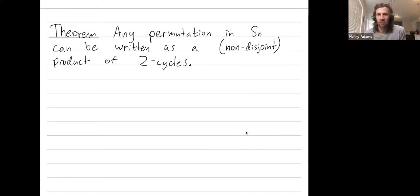Welcome folks. I want to explain why any permutation in the symmetric group Sn, namely all permutations on a set of numbers from 1 up to n, can be written as a product of two cycles. Let me clarify that this is a non-disjoint product, so the two cycles are going to have repeated elements in between them.